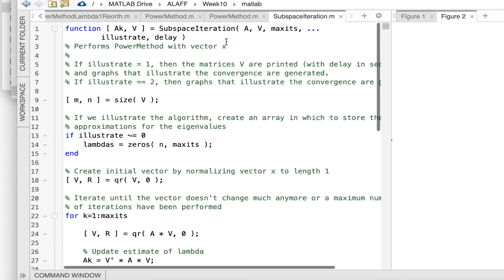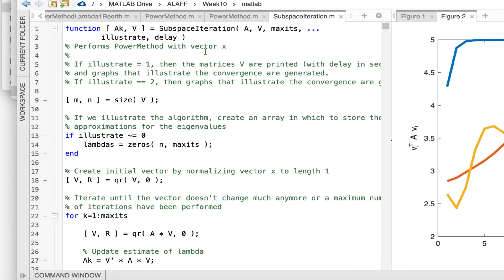Here I've created an implementation of the subspace iteration. How I got here was simply to take the last implementation of the power method and copy that over, and then make a few changes. In particular, I pass in matrix A and the matrix V.